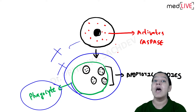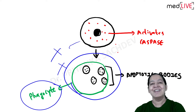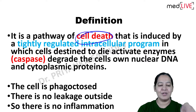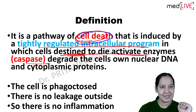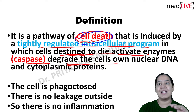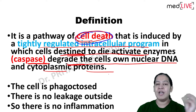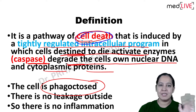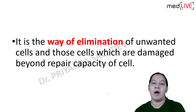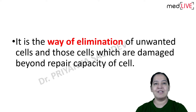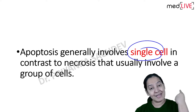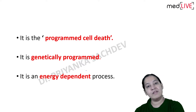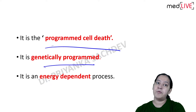There is no leakage of cytoplasm outside, so there is no inflammation. No leakage, no inflammation - these are the hallmarks of apoptosis which differentiate it from necrosis. Apoptosis is a pathway of cell death in which it is tightly intracellularly regulated. Apoptosis occurs in a single cell, not a group of cells - in contrast to necrosis which occurs in a cluster of cells.